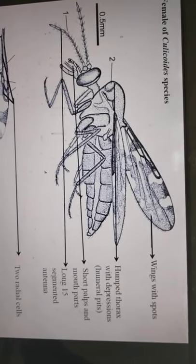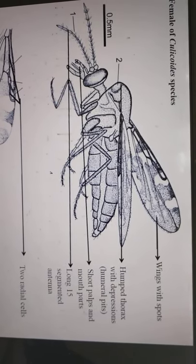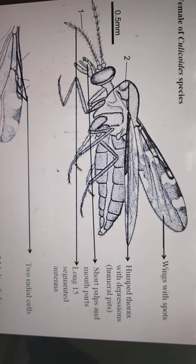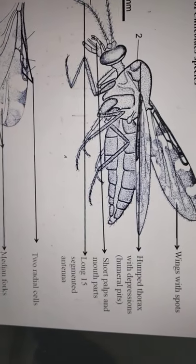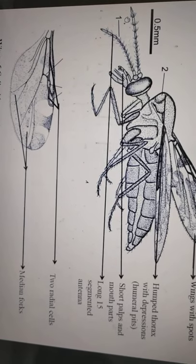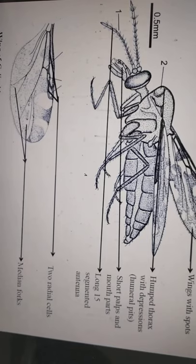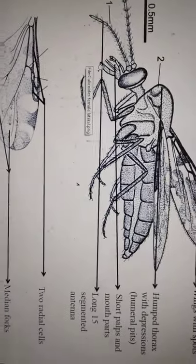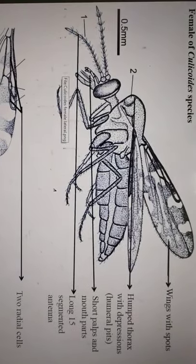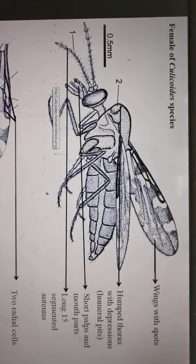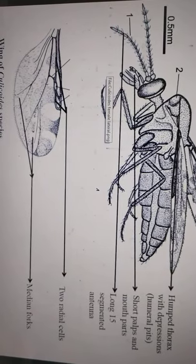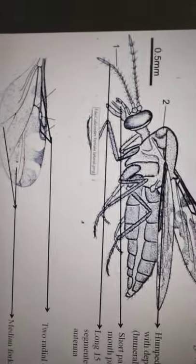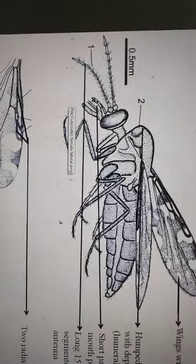In the diagram you are required to draw for Culicoides, you can see the mottled wings with spots, the median fork, and the radial cell. The hump thorax is visible, and the antenna is very long — fourteen to sixteen segments. The palps are short. In the case of Simulium the palps are long, whereas Culicoides has short palps. For Culicoides there are four larval stages, compared to six in Simulium.